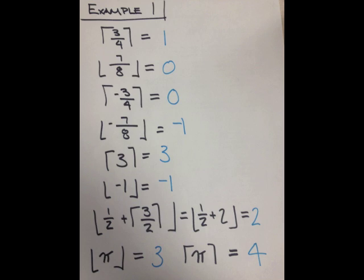In example number one, we'll be looking at some basic uses of the floor and ceiling function. For example, the ceiling of 3/4 or 0.75 is 1, the floor of 7/8 is 0, the ceiling of negative 3.4 is 0, and the floor of negative 7/8 is negative 1. The ceiling of 3 is 3, and the floor of negative 1 is negative 1. Something we can see from that is the floor or ceiling of an integer is itself.